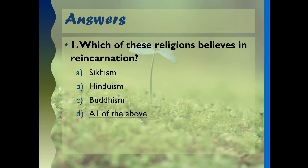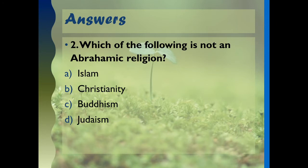Number two: which of the following is not an Abrahamic religion? If you look through this text, Abrahamic means they can trace their ancestry back to one founder - there are three of these and they are Islam, Christianity, and Judaism. But Buddhism is not an Abrahamic religion.